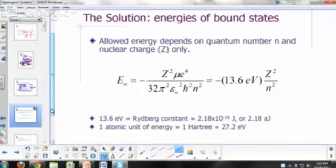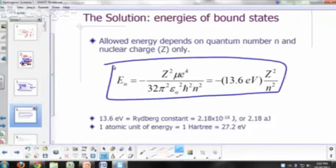So what's the solution to our Schrödinger equation for bound states? When the energy is less than zero, you can find that this will be the solution. So it's going to depend on Z.